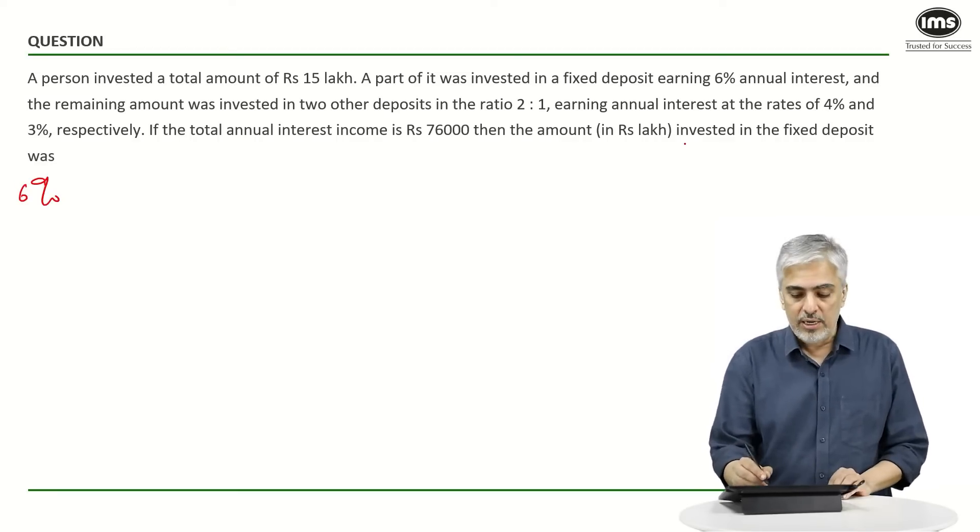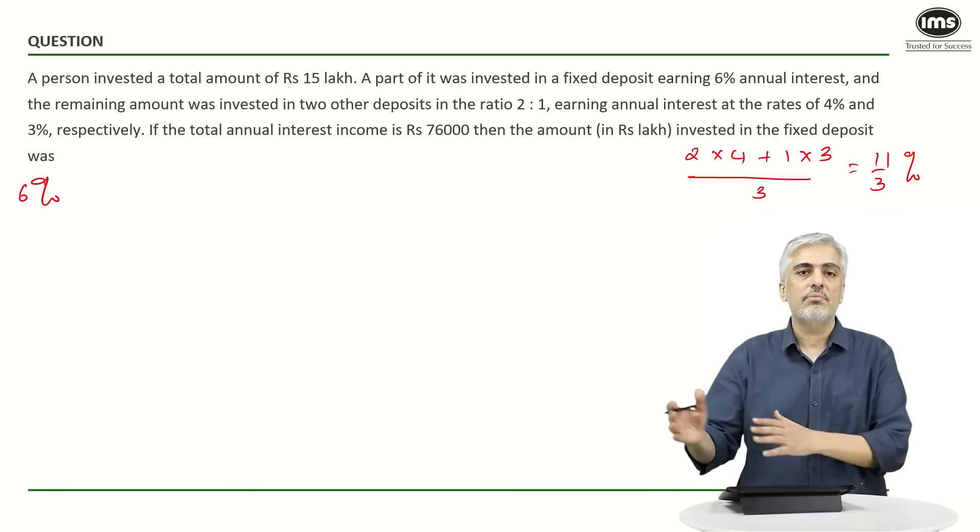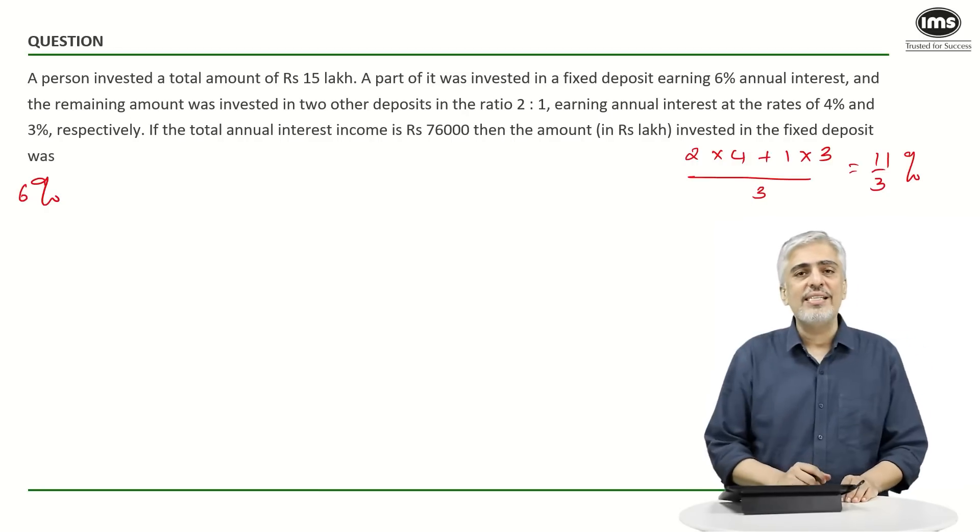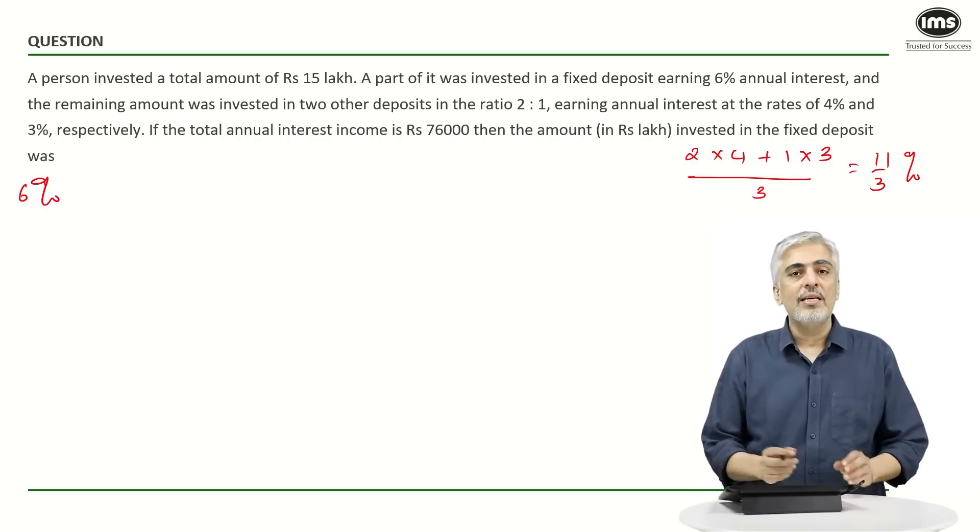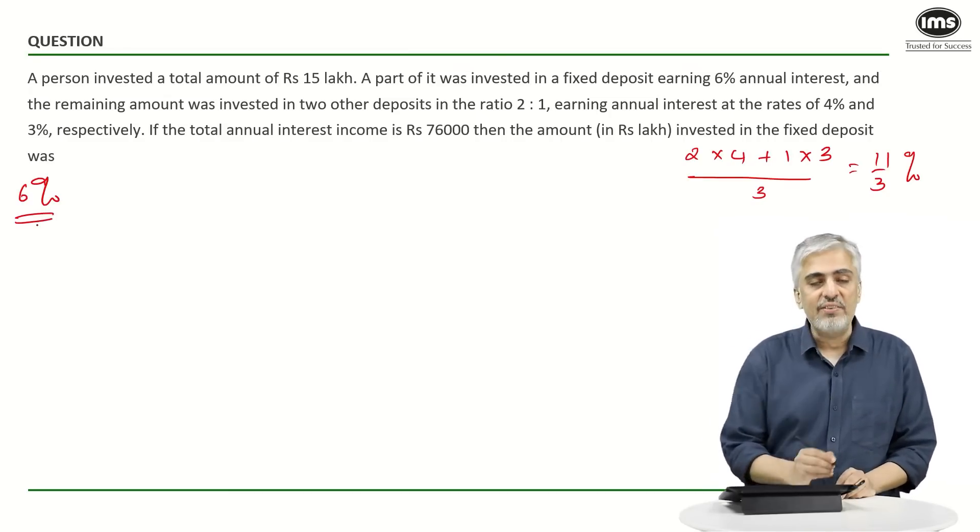So what you should be able to do first is you should be able to do this part of the calculation orally. He has invested two parts at 4% and one part at 3%. Divide that by three parts, making it 11/3%, as an average rate. So that would be 3.67 or whatever, but just leave it as 11/3%.